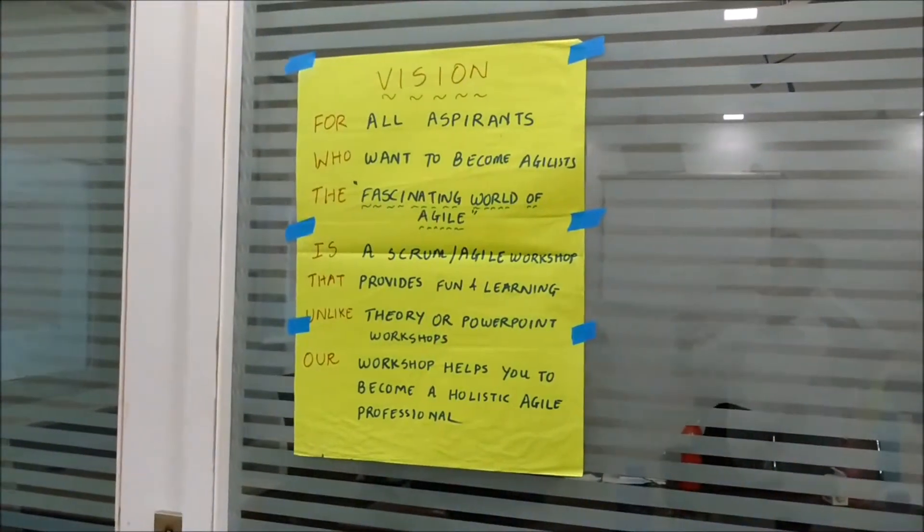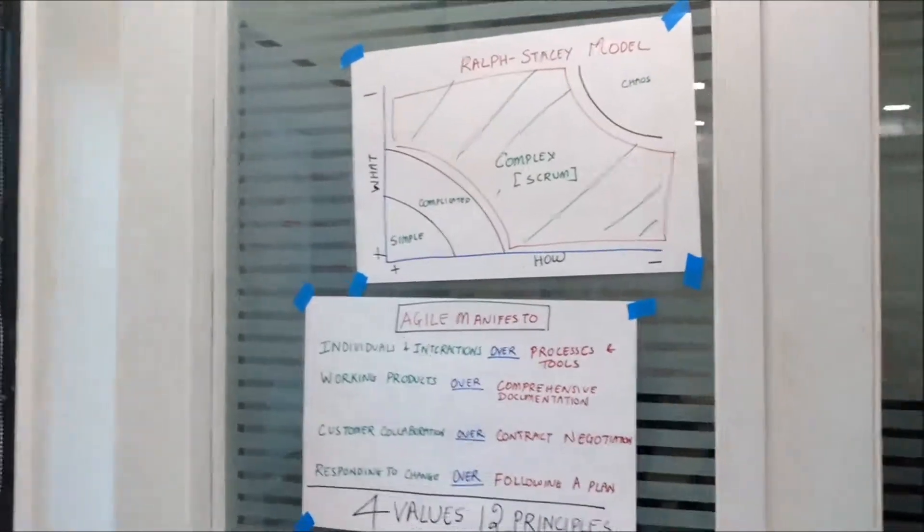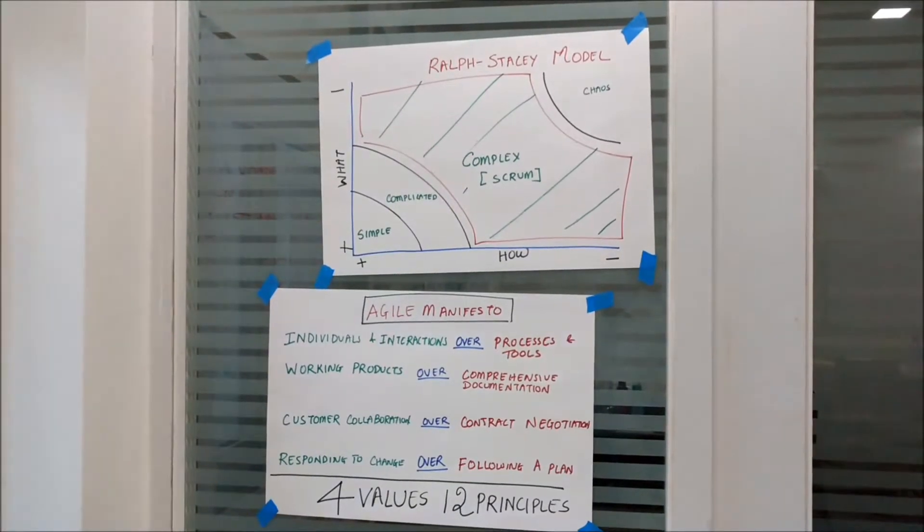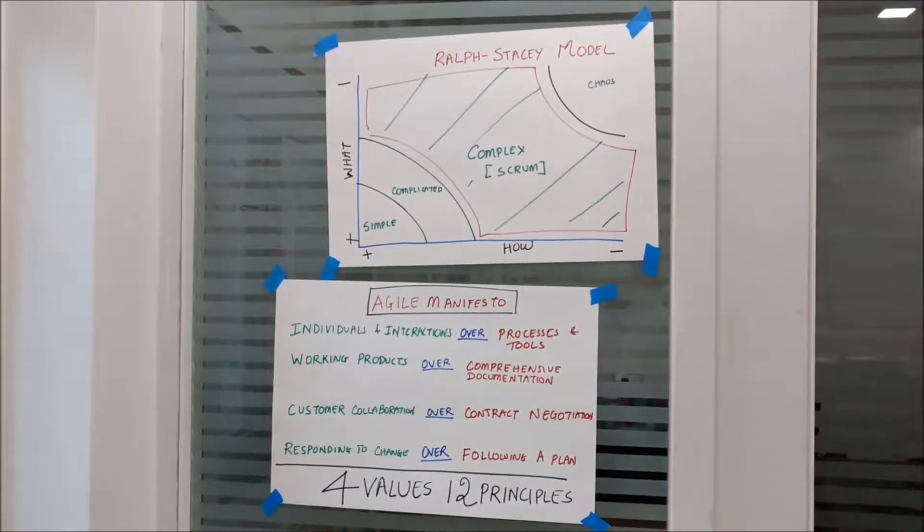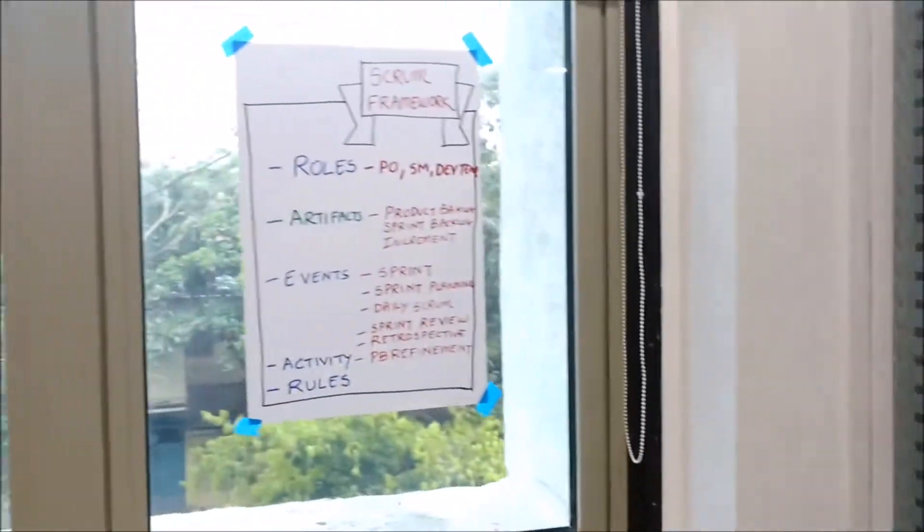Yesterday, that is in the morning, you can see these are some of the charts that I have drawn over the day: the Ralph Stacey model to explain the complexity and applicability of scrum, the agile manifesto.